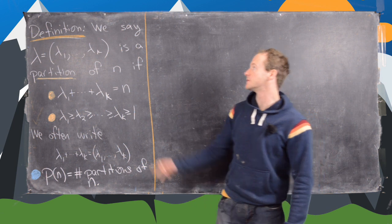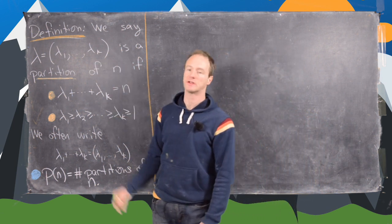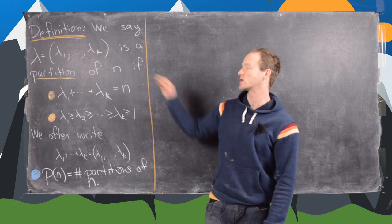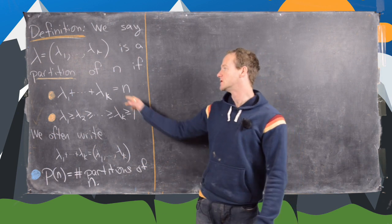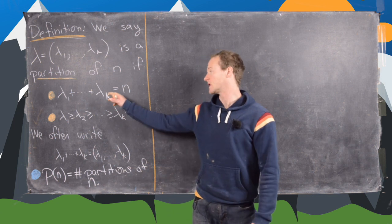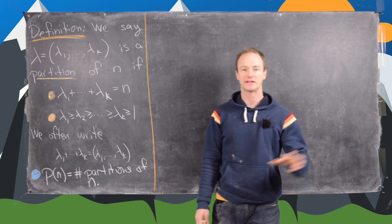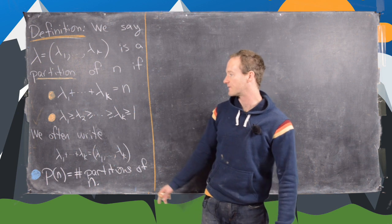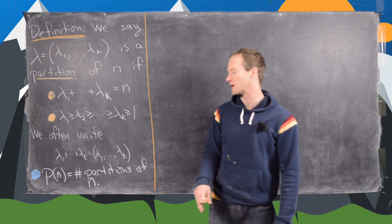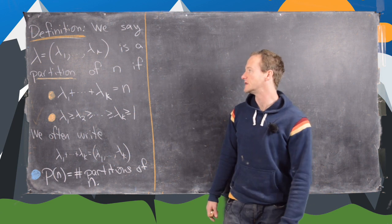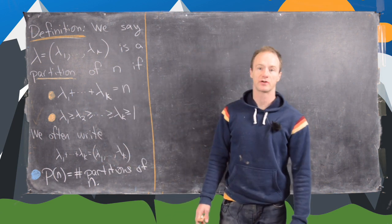So let's look at this definition first. We say that lambda, this k-tuple lambda 1 to lambda k, is a partition of n if these two things are satisfied: lambda 1 plus lambda 2 up to lambda k equals n, so they sum to n, and lambda 1 is greater than or equal to lambda 2, all the way up to lambda k, which is greater than or equal to 1. So these are in non-increasing order.